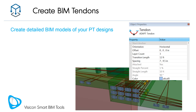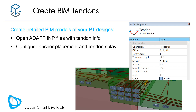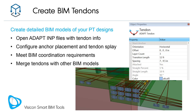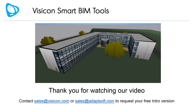If you are an ADAPT Builder user, you can also use Visicon to create detailed BIM models of your post-tension tendons. To get started, open an ADAPT INP file with tendon info. Once opened in Visicon, configure the tendon's anchor placement and splay to produce a realistic installation layout. The BIM tendons will help you meet your project's BIM requirements. Use Visicon to merge your BIM tendons with any other discipline models. Contact sales at visicon.com or sales at adaptsoft.com to request your free intro version.